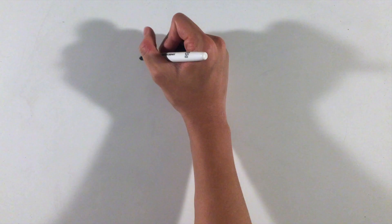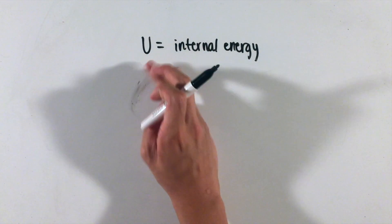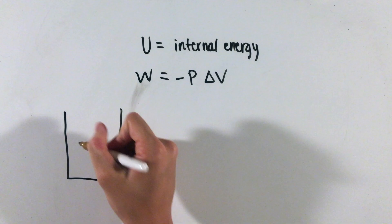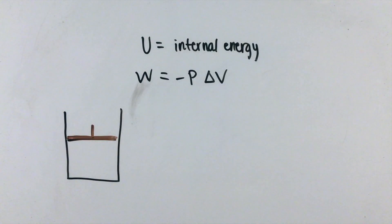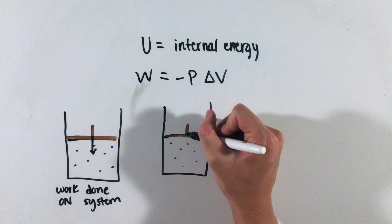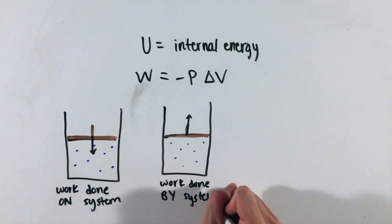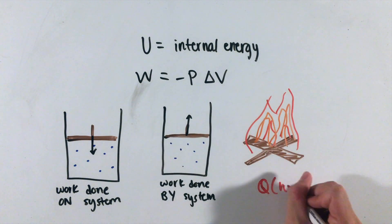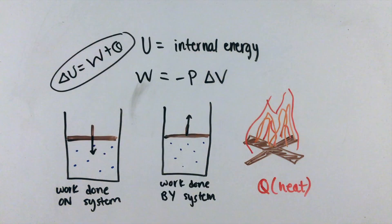Now, ideal gases have an internal energy associated with them as well, represented by the letter U. This internal energy can change if work is done. The work done on a system is given by the negative pressure times the change in volume. For example, if I were to press down on this piston, reducing the volume, I would do work on this system, whereas if the gas pressure pushed the piston up, the system would have done work on its surroundings. Another quantity that can change the internal energy of a system is heat, or Q, leading to this energy conservation equation that the change in internal energy is the sum of the work done on the system, plus the heat added to the system.